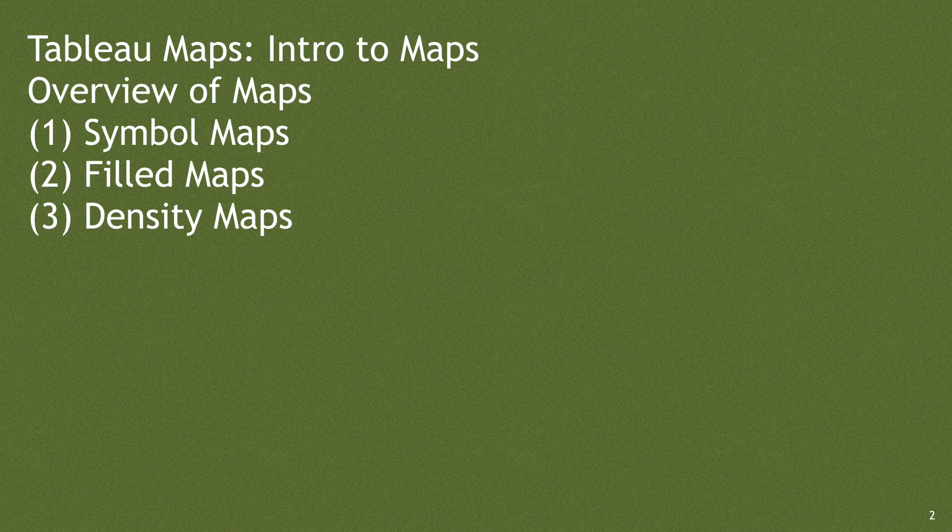The three major map types are: number one, symbol maps; number two, field maps; and number three, density maps.